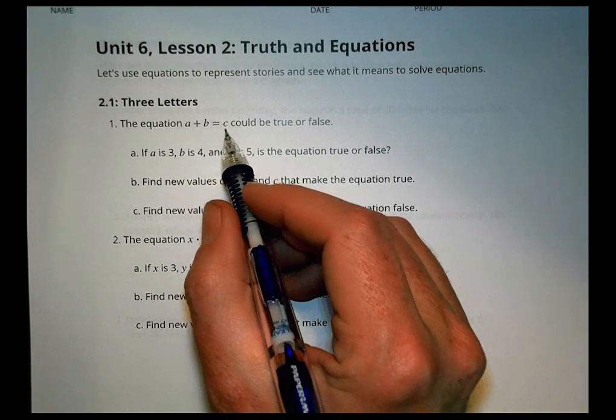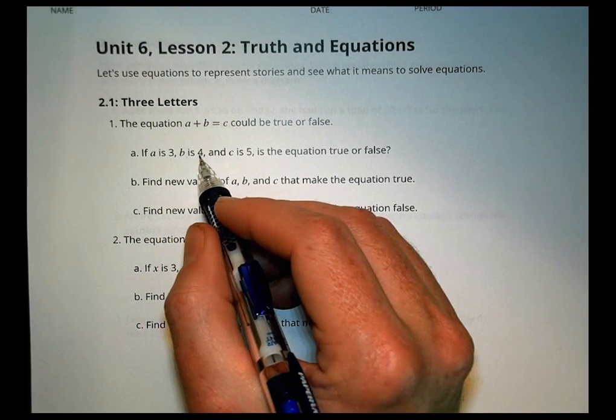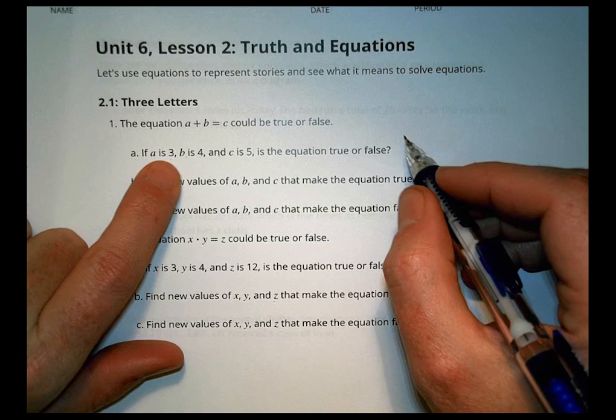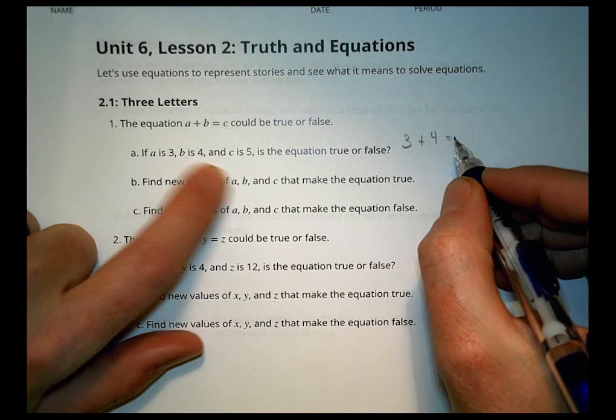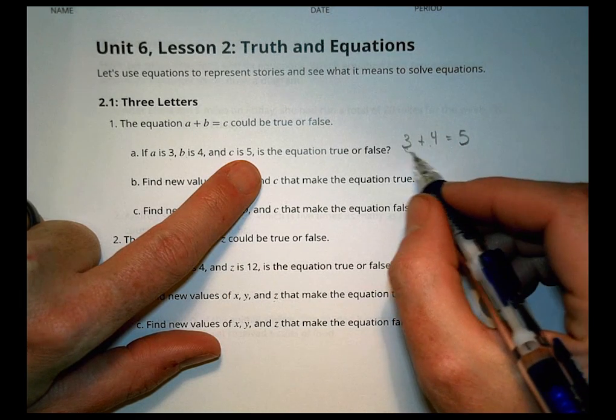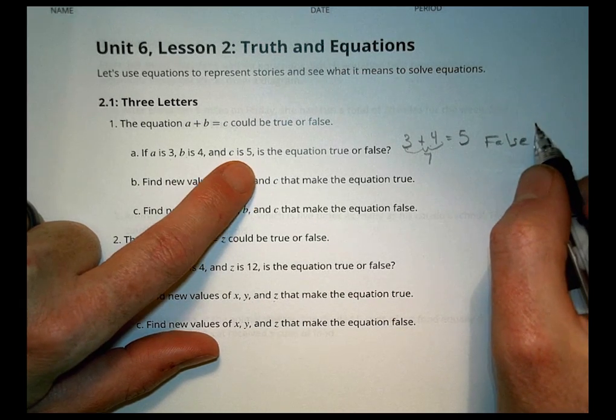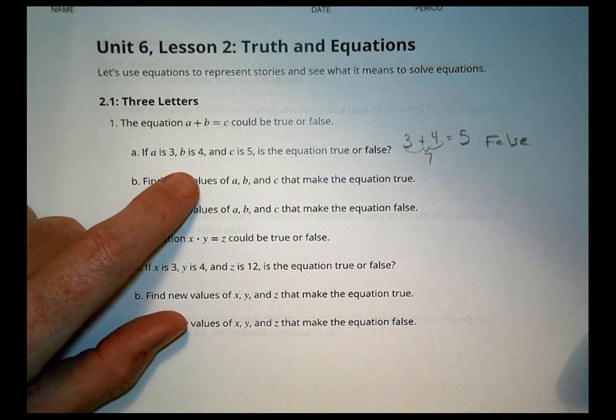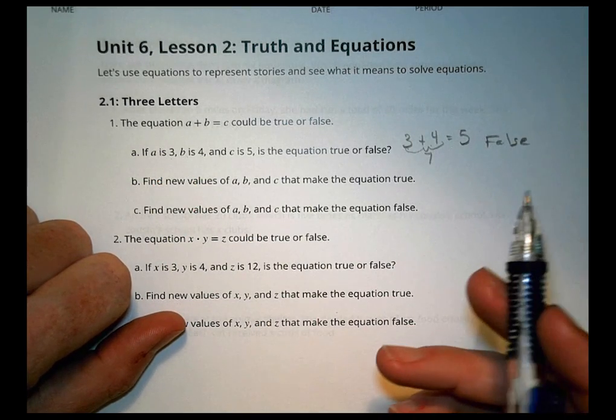It says the equation A plus B equals C could be true or false. If A is 3 and B is 4 and C is 5, is the equation true or false? Well, let's just see here. So if A is 3, we would say 3 plus B's value is 4 equals C's value of 5. Well, what is 3 plus 4? 3 plus 4 happens to be 7. So this would be a false statement or a false equation there, right?